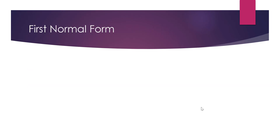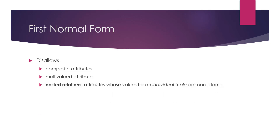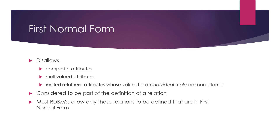Let's start with the first normal form. The first normal form does not allow attributes with multivalues, composite attributes, or nested relations where attribute values for individual tuples are non-atomic. This is actually considered part of the definition of a relation. Most relational database management systems will not allow you to create relations that are not in the first normal form. So only relations in the first normal form are allowed to be defined in most RDBMS.